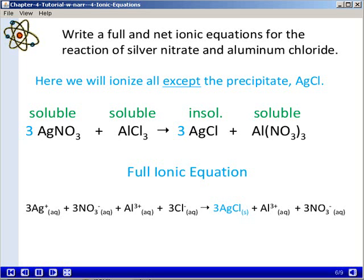Whereas all the other substances are soluble salts and are written in ionic form. So we end up with three silver ions in aqueous solution, three aqueous nitrate ions, an aqueous aluminum ion, three chloride ions on the left side. And on the right side we have silver chloride as a solid, plus aluminum ion in aqueous solution and aqueous nitrates.